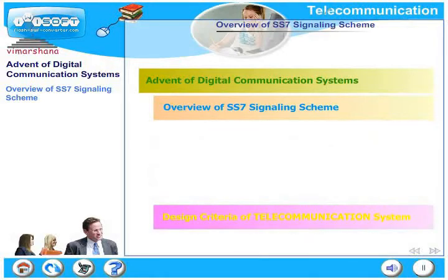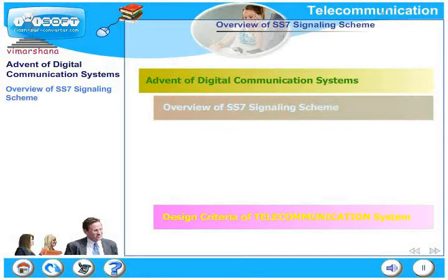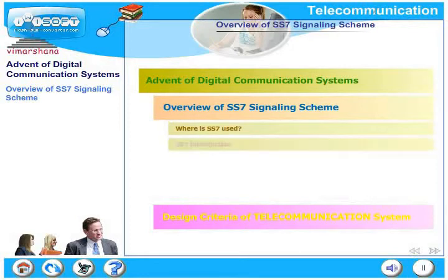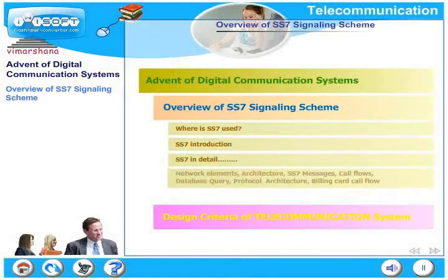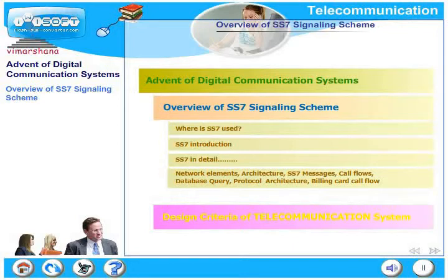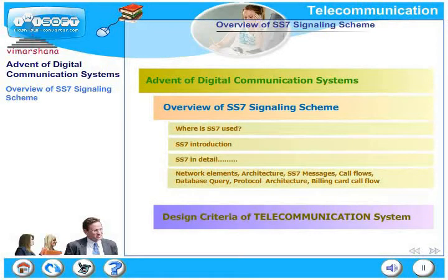Specifically in this section we will deal with an overview of the SS7 signaling scheme. We have already seen the role of SS7. Now in detail we will look at where SS7 is used and give a brief introduction to SS7. Later we will look at SS7 in detail — the network elements, architecture, the messages that flow in SS7 signaling, typical call flows, a database query-based call flow, the protocol architecture, and a billing card call flow. After that we will briefly look at design criteria for a typical telecommunication system.